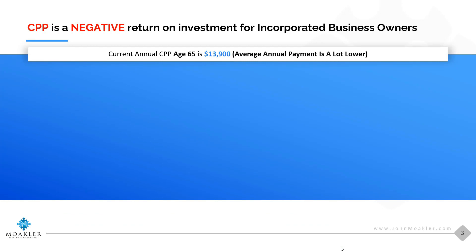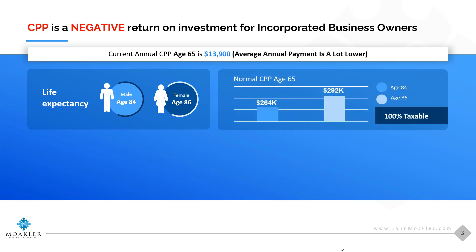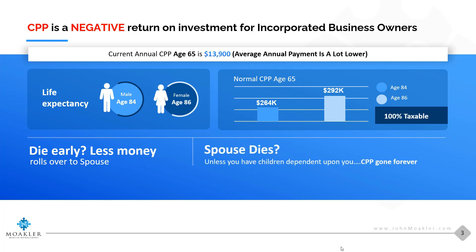The average Canadian gets a lot less than that, but let's use that number. The life expectancy for the average Canadian male is age 84 and for a female it's age 86. So in retirement you're either going to receive $264,000 or $292,000 from the Canada Pension Plan, but it's going to be 100% taxable on your personal tax return. And what happens if you die early? You'll get less money, and while it does roll over to your spouse, upon your spouse passing away — unless you have dependent children — the CPP is gone forever.